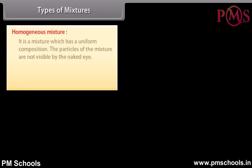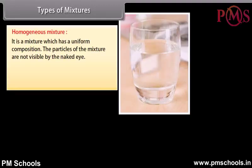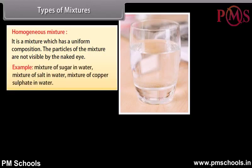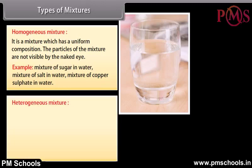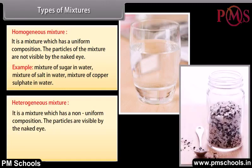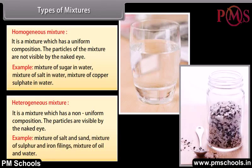Types of mixtures: A homogeneous mixture has a uniform composition and its particles are not visible to the naked eye. Examples include mixtures of sugar in water, salt in water, and copper sulfate in water. A heterogeneous mixture has a non-uniform composition and its particles are visible to the naked eye. Examples include mixtures of salt and sand, sulfur and iron filings, and oil and water.